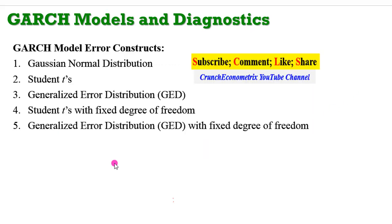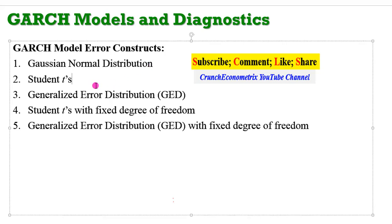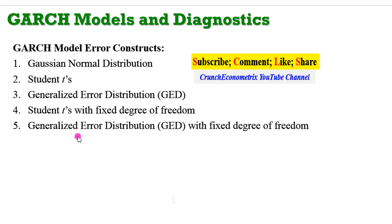I need to mention that five error constructs are used for the GARCH model in the EViews interface: the Gaussian normal distribution, which I've been using from the inception; the Student's t; the Generalized Error Distribution (GED); and the Student's t and GED with fixed degrees of freedom. In this tutorial I'm only going to use the first three error constructs. We are going to run a GARCH(1,1) model using these three error constructs, then use the criteria I outlined to pick the most ideal model.